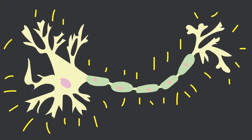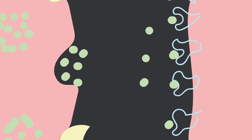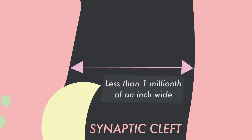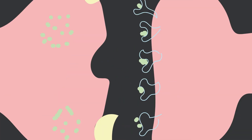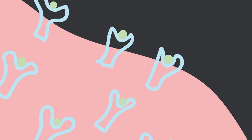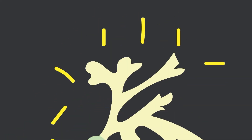When the action potential reaches the axon terminal, it triggers the release of chemicals known as neurotransmitters into the synaptic cleft, which is a fluid-filled gap between neurons that's less than a millionth of an inch wide. Neurotransmitters from this presynaptic neuron bind to specific receptor sites on dendrites of nearby neurons, stimulating them and starting their action potential.